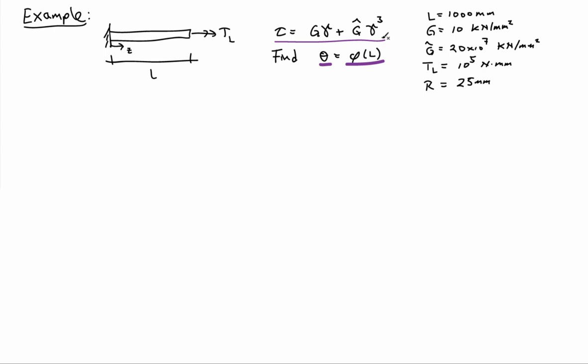So tau is going to be equal to G times gamma plus G hat times gamma cubed. So G hat is a second material constant, and G will take to be 10 gigapascals, and G hat will take to be 20 times 10 to the 7 gigapascals.